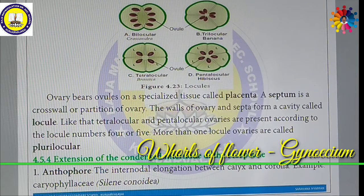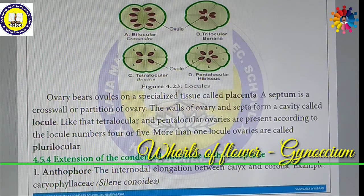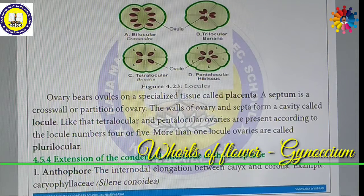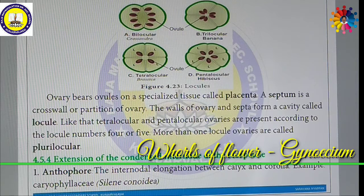The ovary contains ovules and a specialized tissue called the placenta. A septum is a cross-wall within a portion of the ovary. The wall of the ovary and the septa form a cavity called a locule. Tetralocular and pentalocular ovaries are present in Hibiscus. If it has more than one locule, it is called plurilocular.